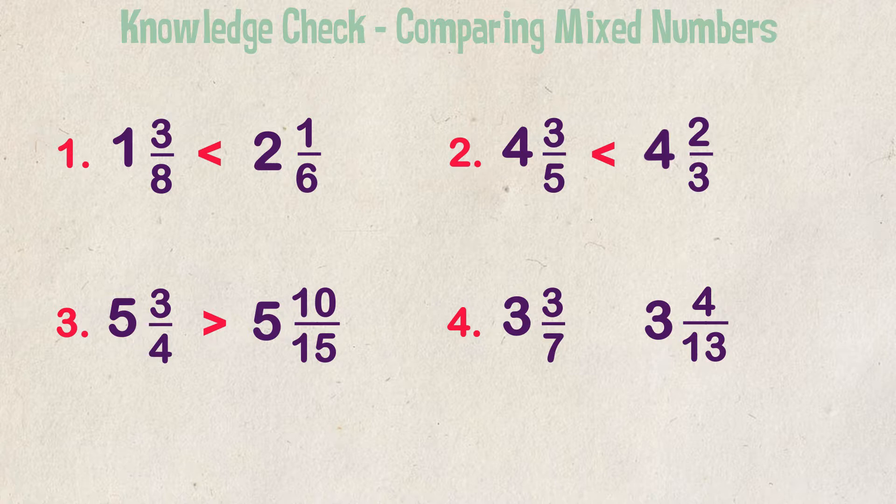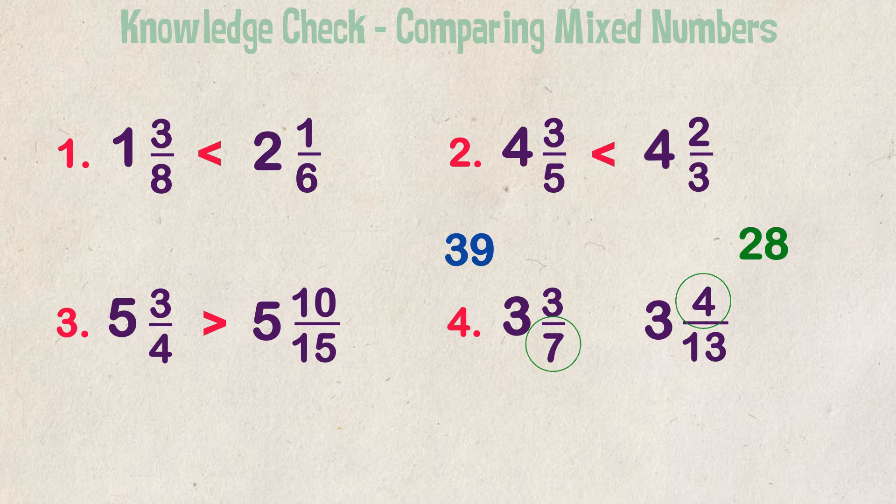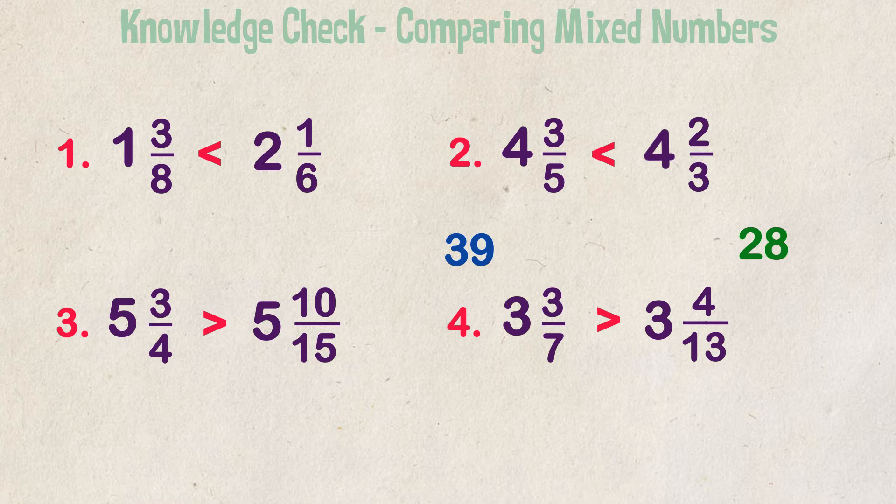Last example. Compare 3 and 3 sevenths to 3 and 4 thirteenths. Again, whole numbers are the same, so let's move to the proper fraction. 3 times 13 is equal to 39. 7 times 4 is equal to 28. 39 is greater than 28, so 3 and 3 sevenths is greater than 3 and 4 thirteenths.